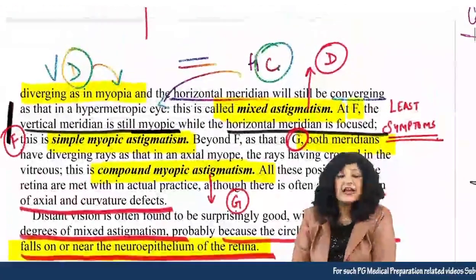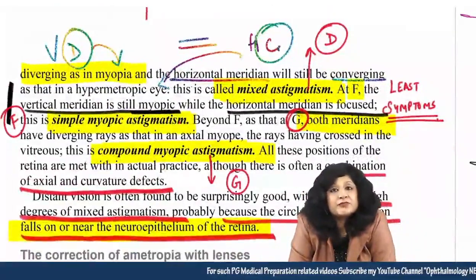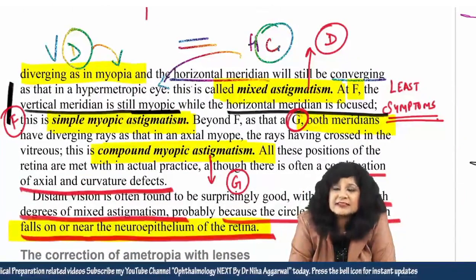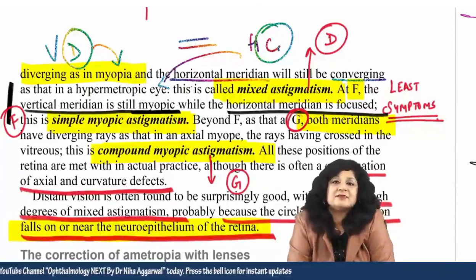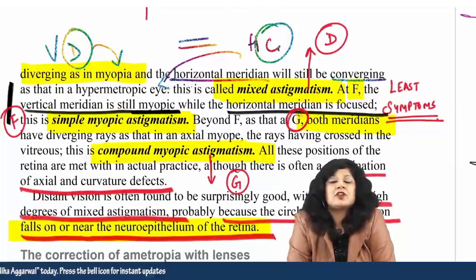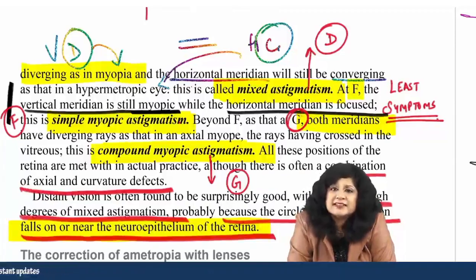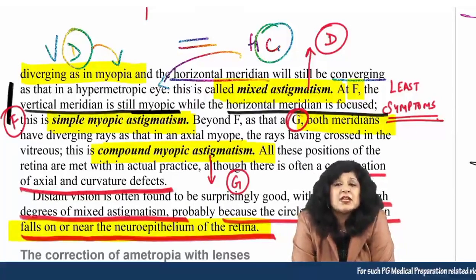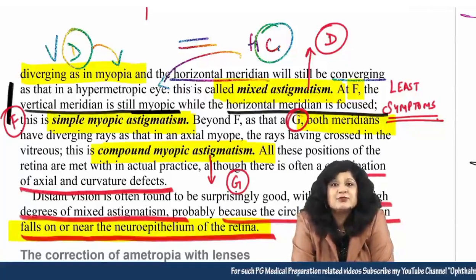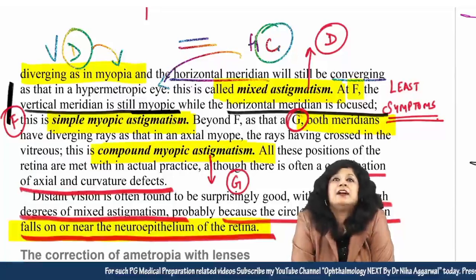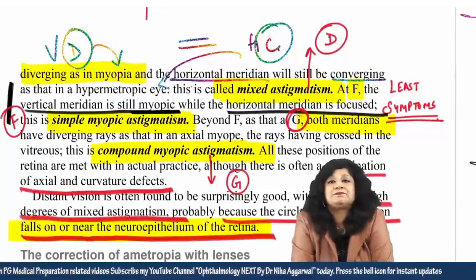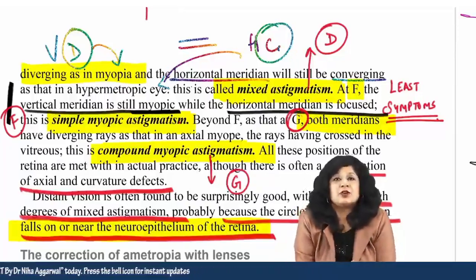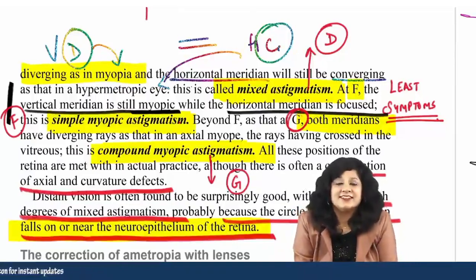This was a comprehensive session where we discussed many points regarding physiological optics: Gullstrand's schematic eye, Listing's reduced eye, physiological significance, emetropia, ametropia, astigmatism, and types of astigmatism. If you liked the session, do like the video and comment. Thank you and happy ophthalmology.